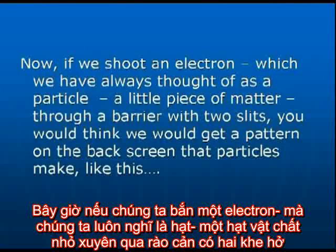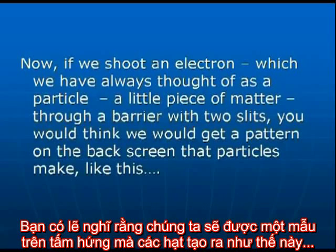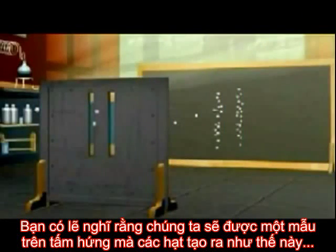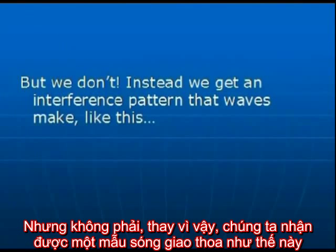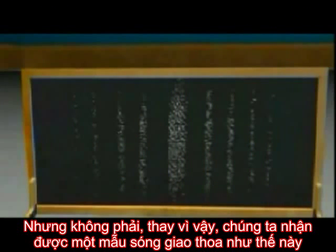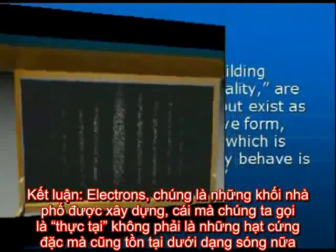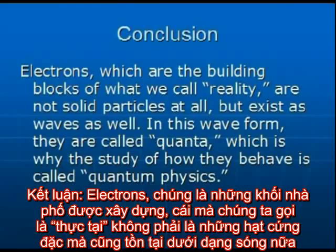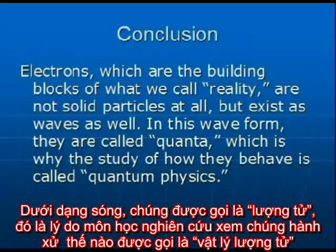Now, if we shoot an electron — which we have always thought of as a particle, a little piece of matter — through a barrier with two slits, you would think we would get a pattern on the back screen that particles make. But we don't. Instead, we get an interference pattern that waves make. The conclusion is that electrons, which are the building blocks of what we call reality, are not solid particles at all, but exist as waves as well. In this wave form, they are called quanta, which is why the study of how they behave is called quantum physics.